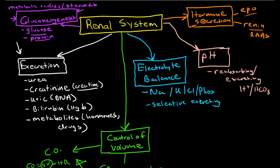Okay, so these are six different functions of the kidney. Again, excretion is the major one that everyone thinks of, and control of volume is second. Electrolyte balance, pH balance, hormone secretion, and last but not least, gluconeogenesis.